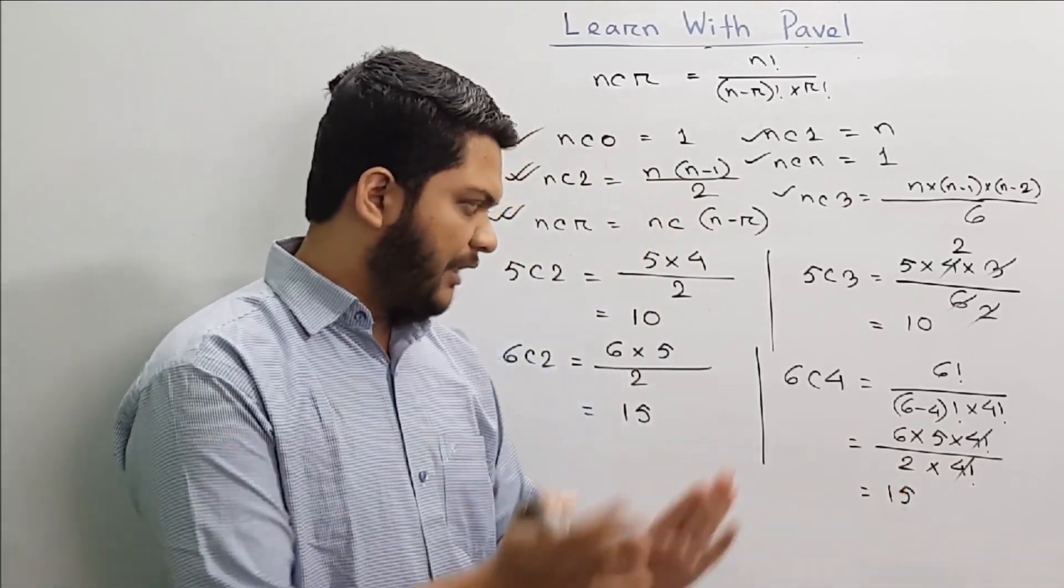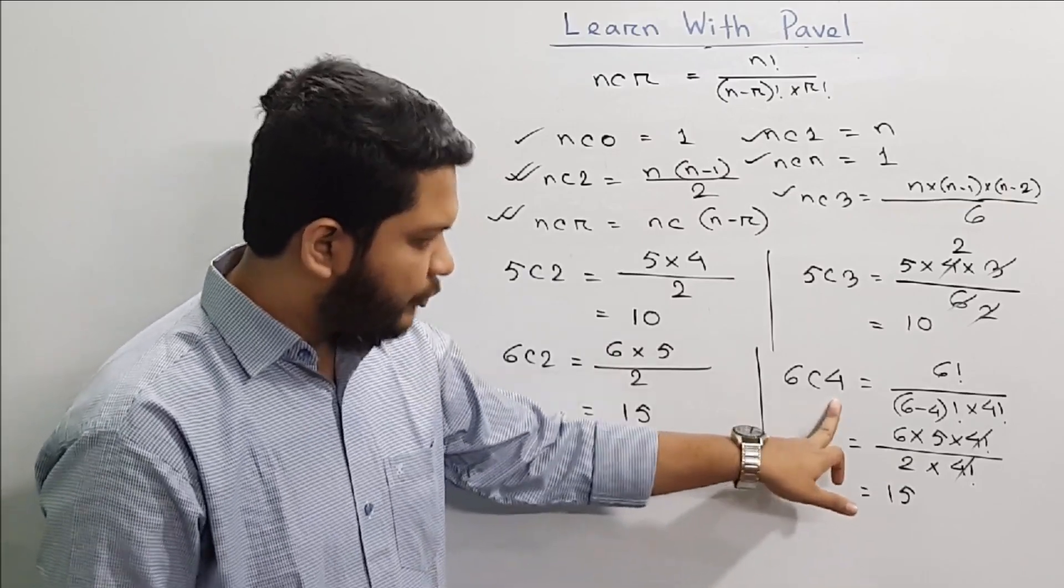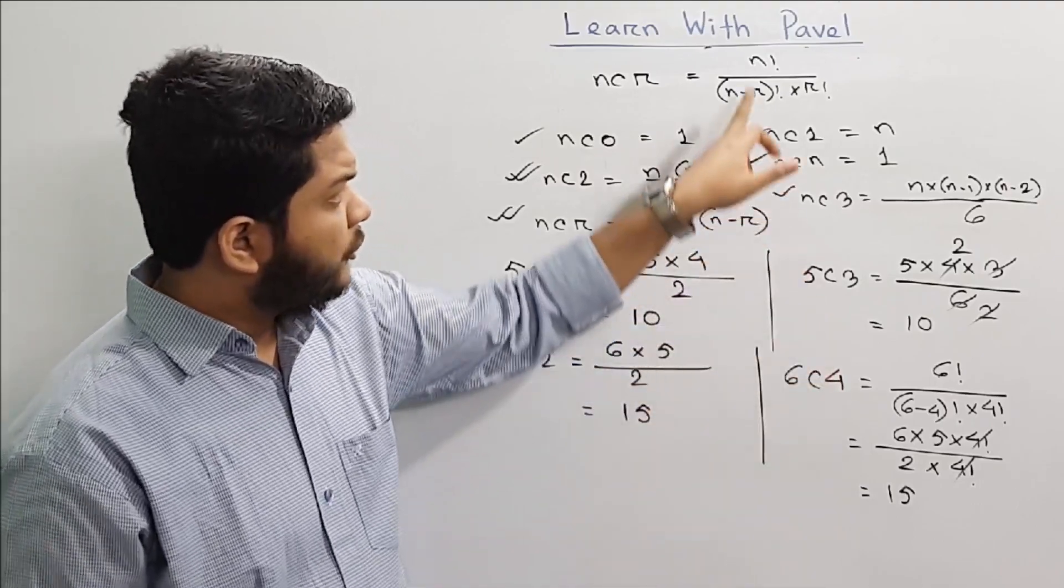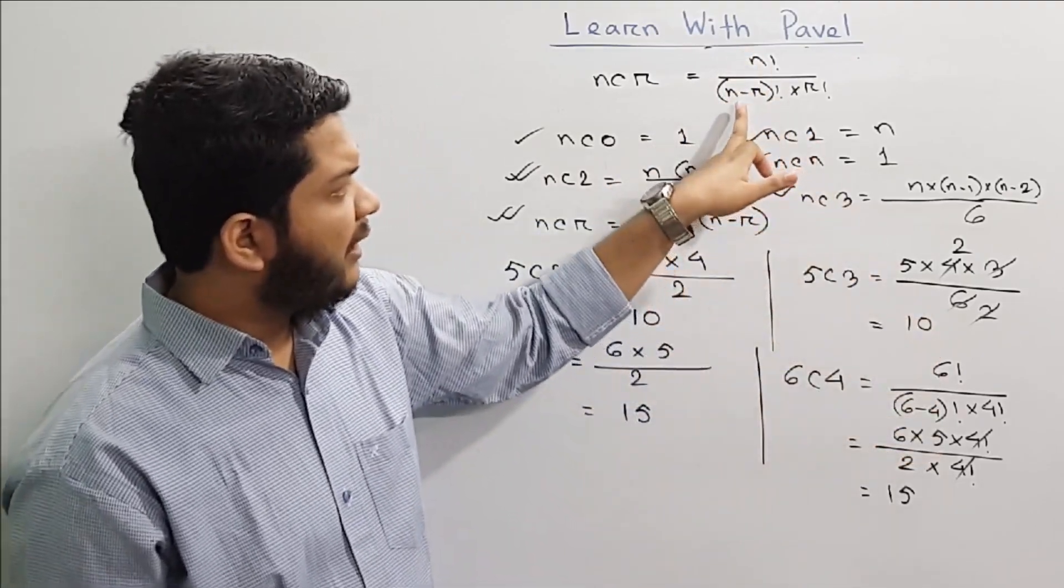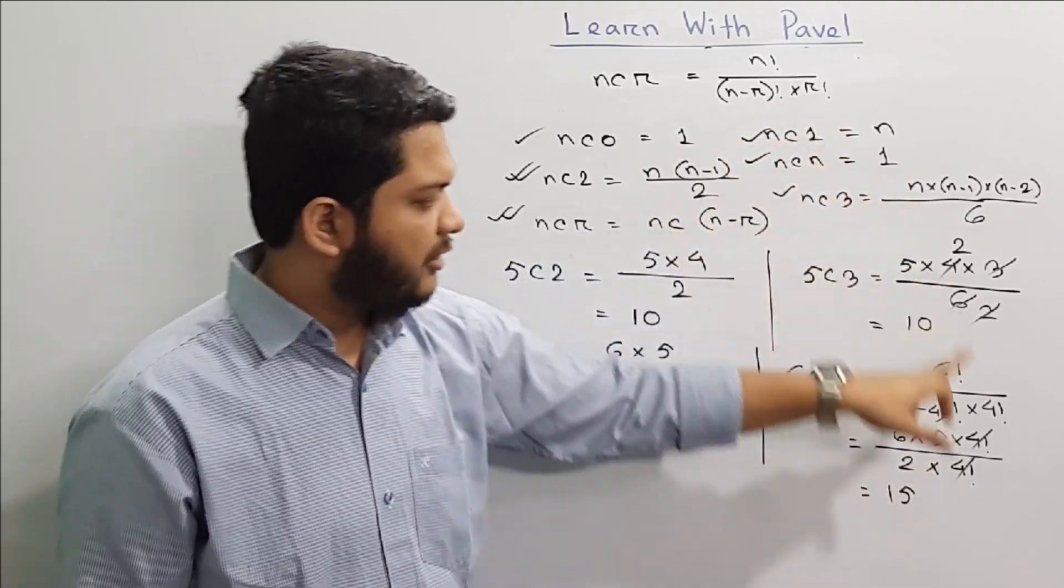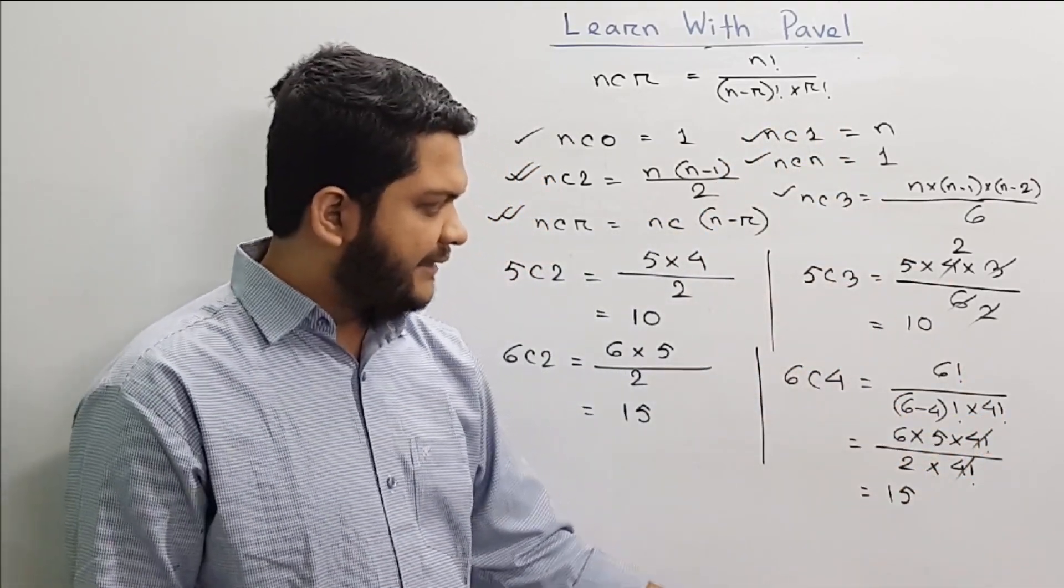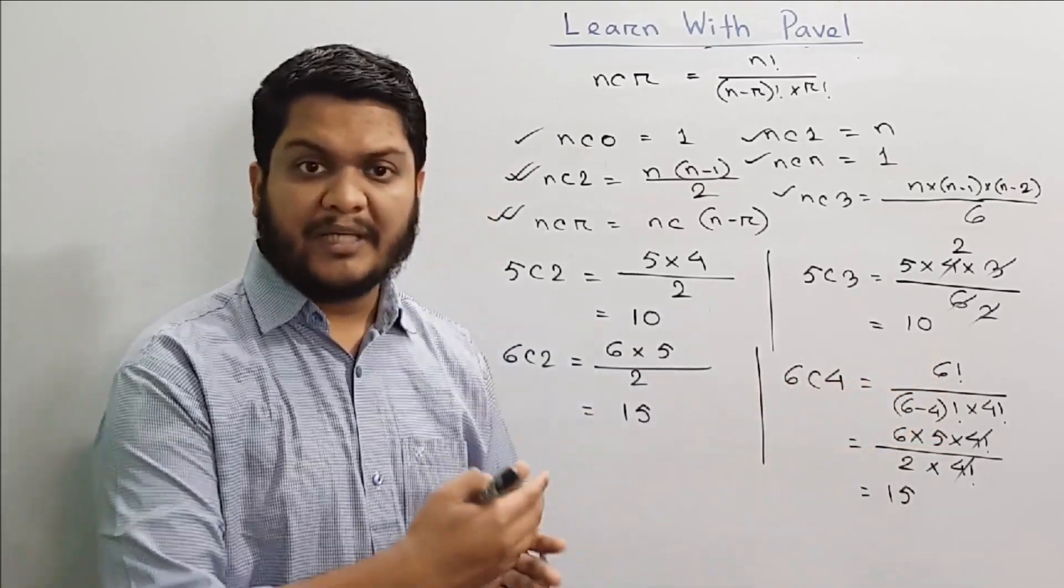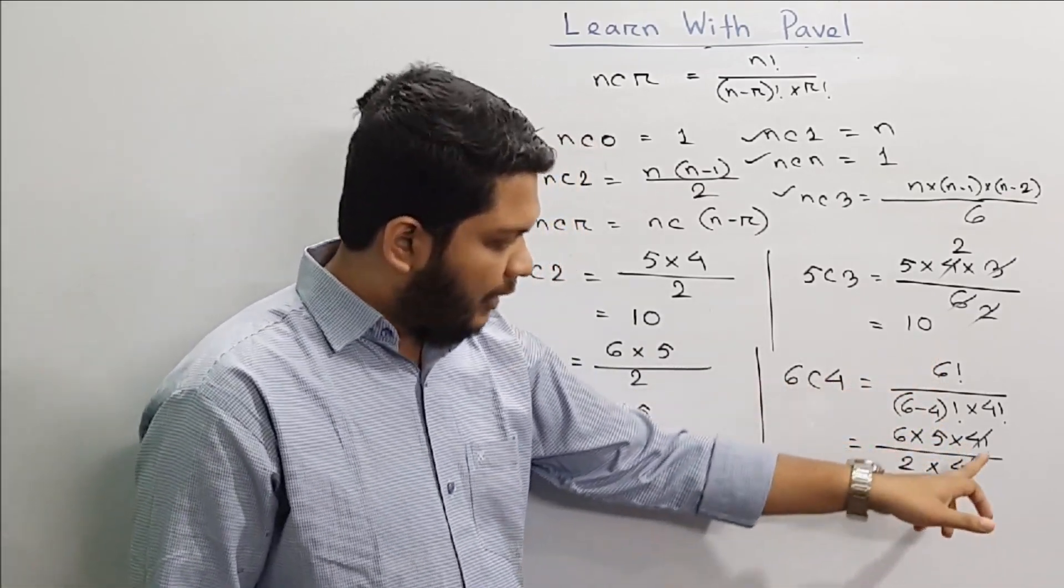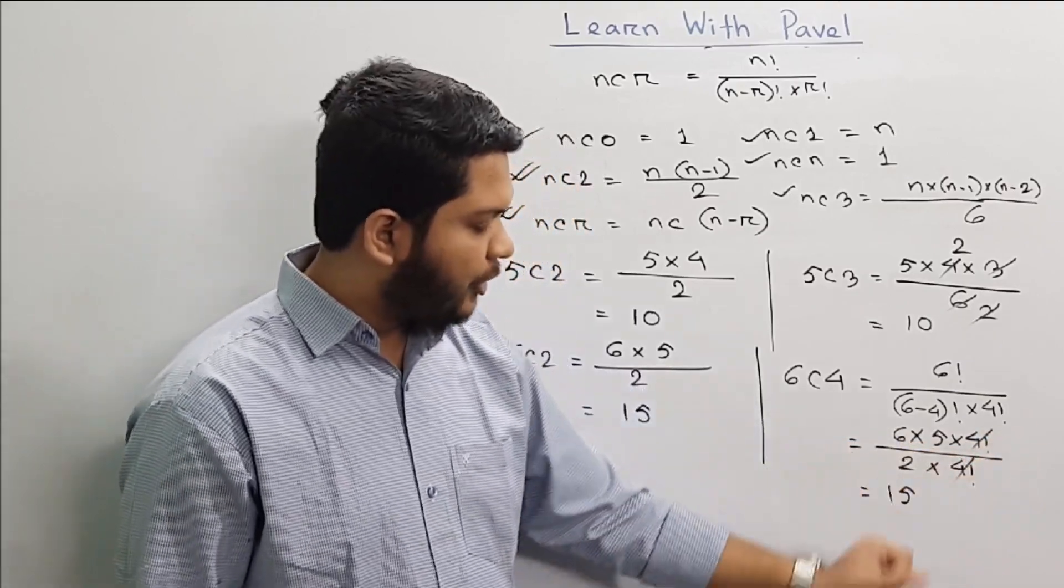This is 6C4. We can see N is equal to 6, R is equal to 4, so N factorial is equal to 6 factorial, and N minus R is equal to 6 minus 4, and R factorial is equal to 4 factorial.